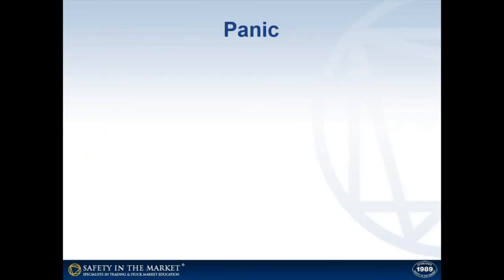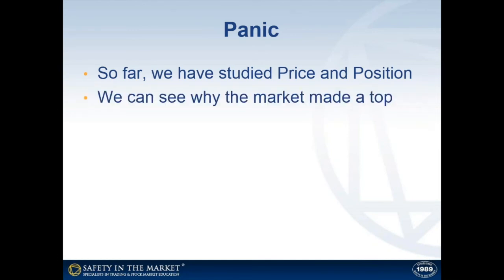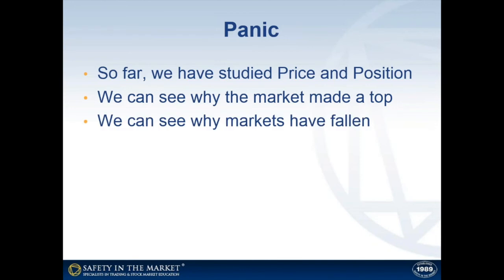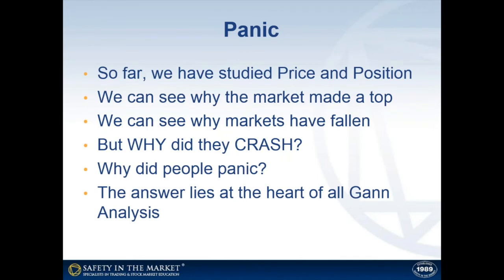That brings us to the third component of the market crash, which is the panic. Why did everybody go nuts — run out and start stocking up on toilet paper, panic buying and emptying shelves? Why was there not just an orderly exit? So far we've looked at price and position: we've seen why the market made a top at the price that it did, and we know from the position of the market why markets have fallen heavily. But here's the key question: why did they crash? Why did people panic? The answer really lies at the heart of all of Gann analysis and everything that Gann teaches us. I'm going to sum up all of Gann analysis and his entire methodology in two simple words — and those words are: history repeats.